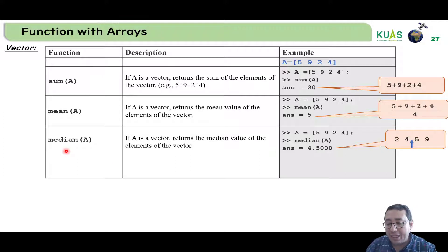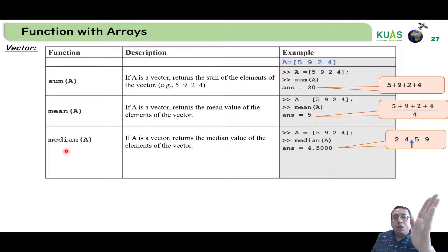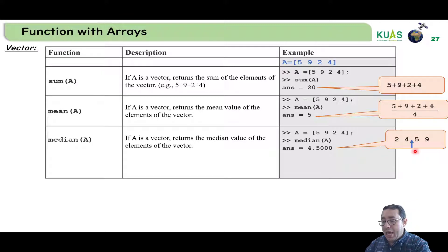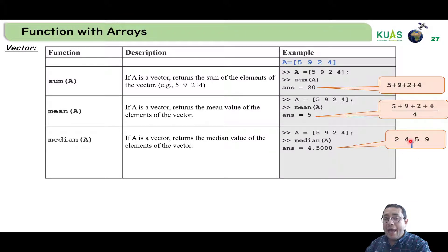How about the median? The median estimates the middle of the numbers. If we have the numbers 5, 9, 2, 4, we arrange them in ascending order: 2, 4, 5, 9. If the total number of elements is an even number — here it's 4 — we estimate the midpoint between the two middle numbers, 4 and 5, which gives 4.5.